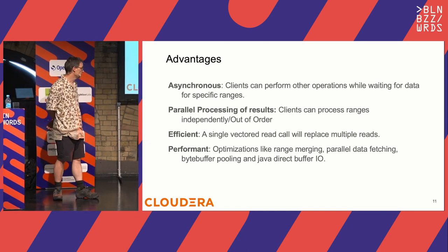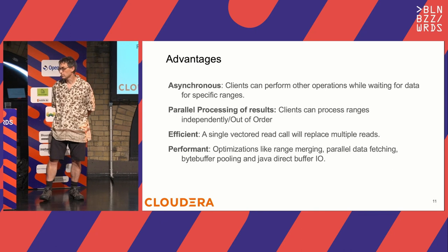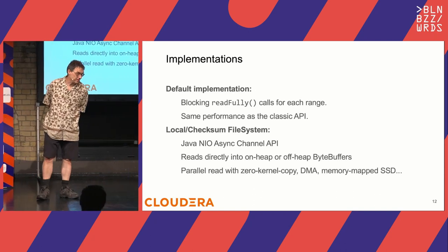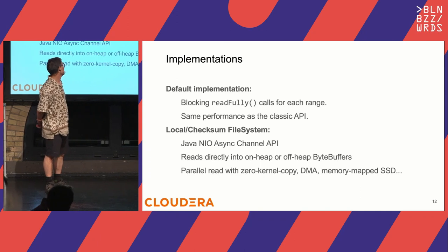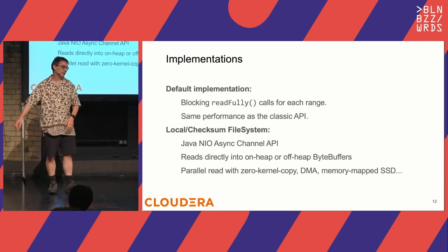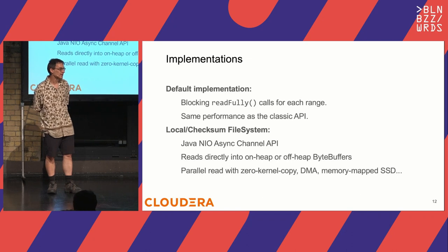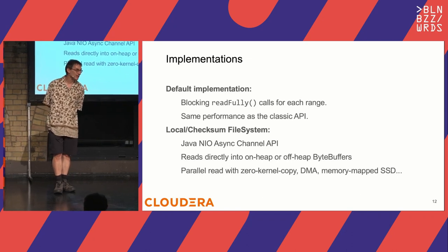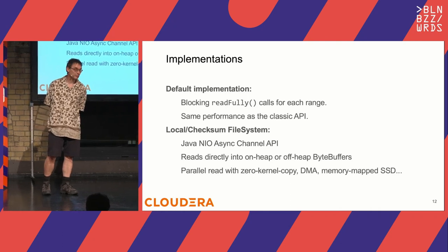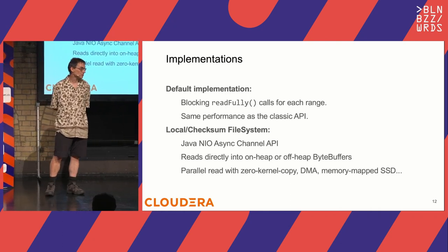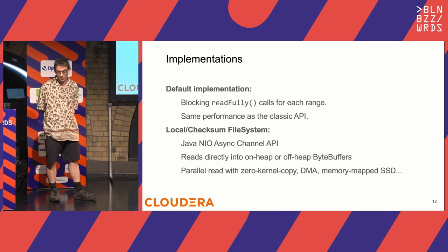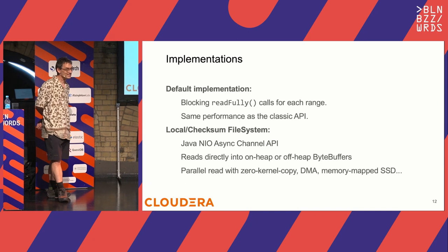How has it been implemented? In Hadoop 3.3.5 we have three implementations. The default falls back to the existing API — sequential seek, read, seek, read — so it is never any worse than what you have today. For the local API, used when running Spark standalone on your laptop for example, we use the Java native APIs and gain all the benefits that operating systems have built since SSDs were invented — roughly 20 years' worth of improvement in data retrieval.